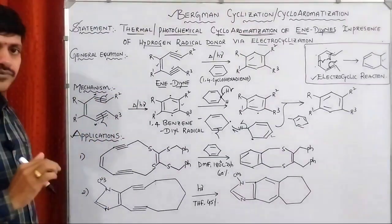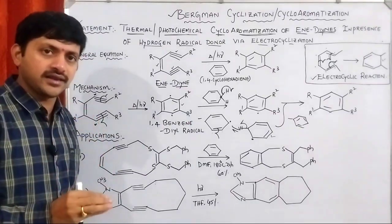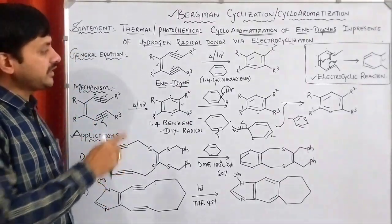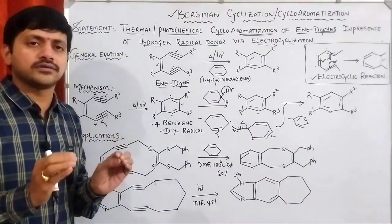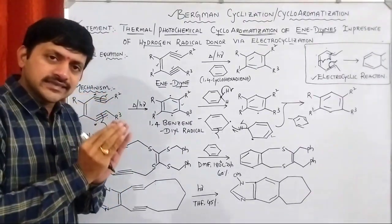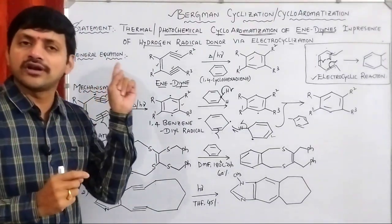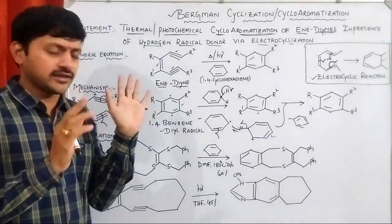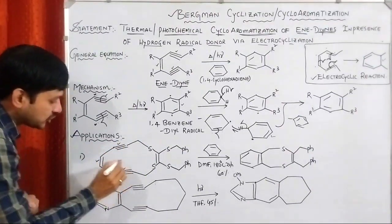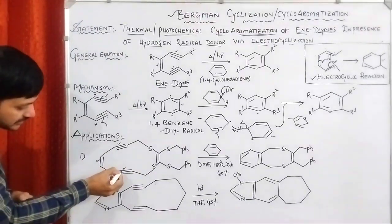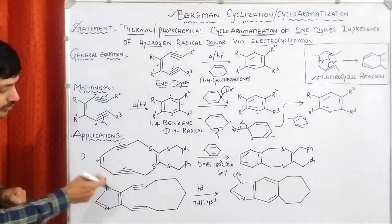Let's see the applications. This reaction is very important for the NET examination — 2018 and 2019 papers had questions related to Bergman cyclization. Simply remember that if you have one ene system and two yne systems, think of Bergman cyclization. The homolytic cleavage of the two triple bonds takes place and produces a six-membered aromatic ring.